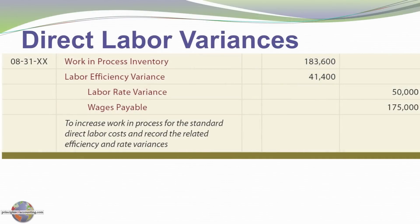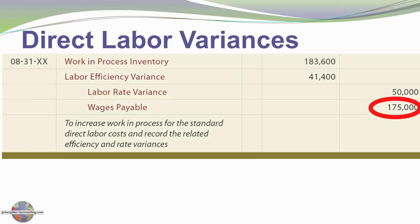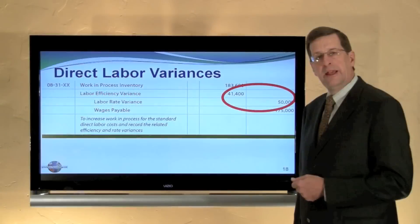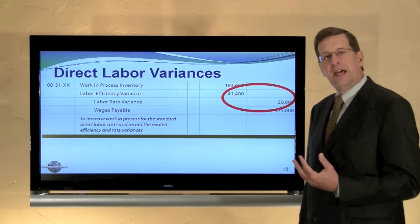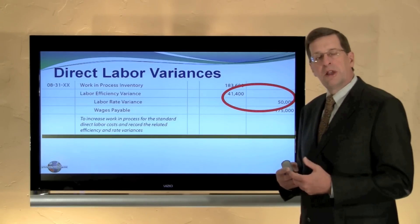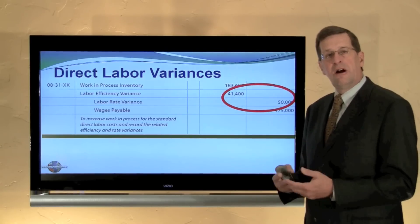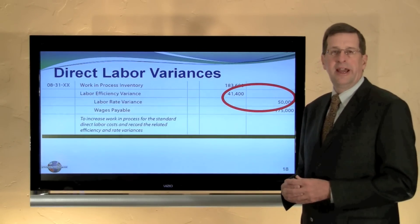Here's the journal entry for the labor variances. Work in process is debited for the standard cost of $183,600. Wages payable is credited for the actual expenditure of $175,000. The differences are charged to the respective unfavorable debit and favorable credit variance accounts related to efficiency and rate variances. This is a very comprehensive accounting model — it pushes into the general ledger those components that management would want to monitor to determine variances from standard, the cause of those variances, and in some cases take necessary corrective actions.